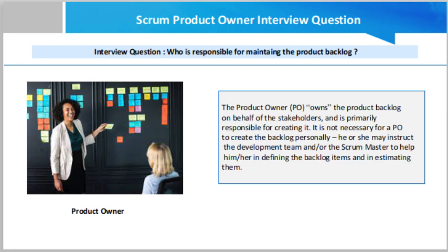The product owner owns the product backlog on behalf of the stakeholders and is primarily responsible for creating it. It is not necessary for the product owner to create the backlog personally — he or she may instruct the development team and the Scrum Master to help in defining the backlog items and in estimating them.